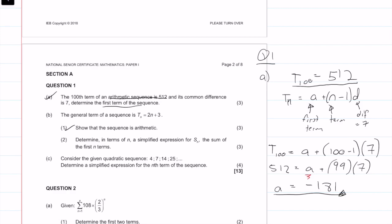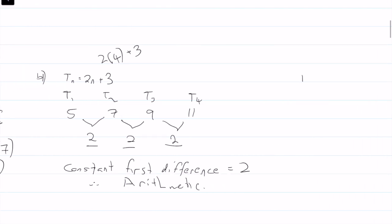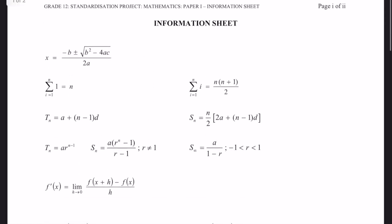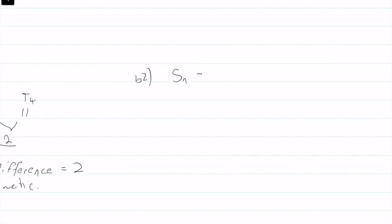Then it says determine in terms of n a simplified expression for Sn, the sum of the first n numbers. So we want an expression for Sn. That was B1. So B2, we want Sn. So again, I go back to my formula sheet, I go back to the arithmetic section, which would be the third line, and I look at Sn equals n over 2 times 2a plus n minus 1d. So I'm just going to put that down. Sn is equal to n over 2 times 2a plus n minus 1d.